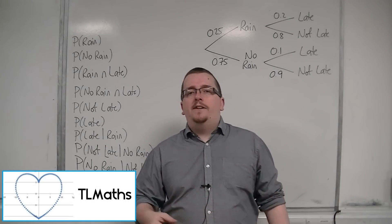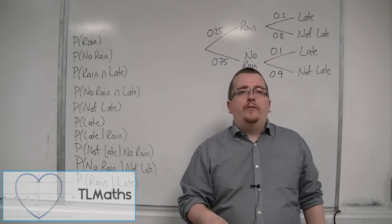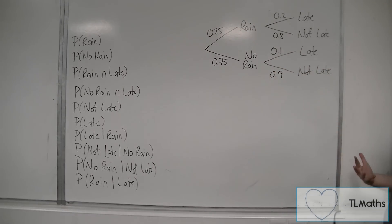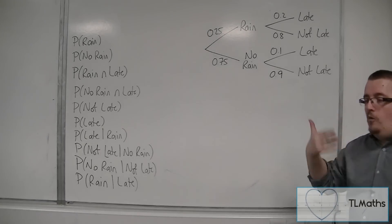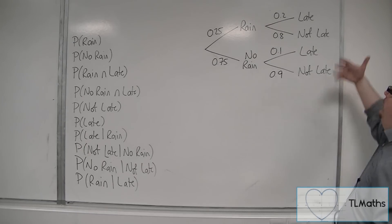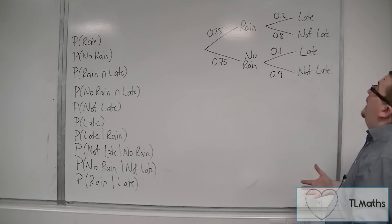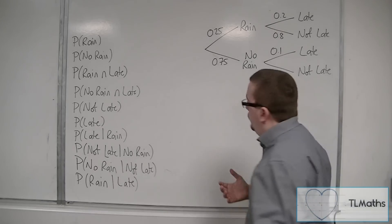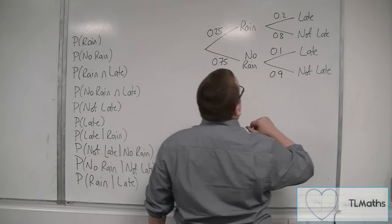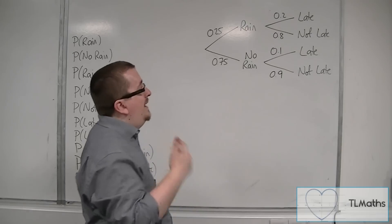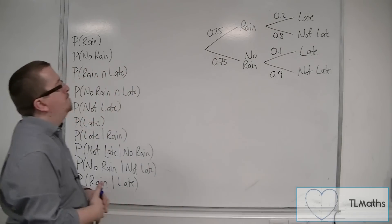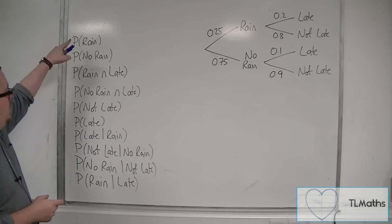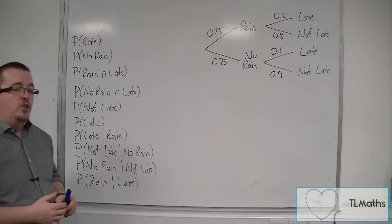In this video, we're going to be looking at finding probabilities from a tree diagram. Here's a tree diagram, and what we can imagine is that, based on whether it rains or not, someone is late to an appointment or late to work. Depending on whether it rains, the probabilities change. So if it doesn't rain, then the likelihood of this person being late is less than if it did rain, and that would probably make sense in a lot of cases. We're going to work through these probabilities and I'm going to show you how to calculate them.